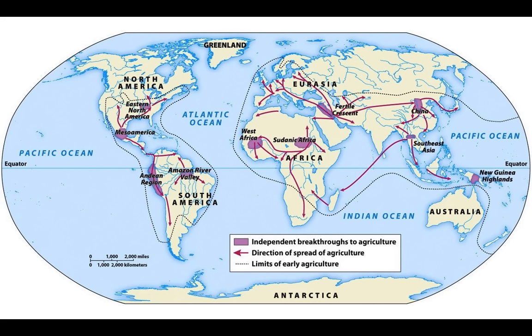We're going to look at two different kinds of agricultural societies. The first one is the places that farmed. On this map, you see these little purple blotches - for example, here in Africa, the Fertile Crescent, China, etc. These are places where agriculture was developed independently, meaning the humans living there actually figured out how to farm on their own. No one was first, but no one was unique either.